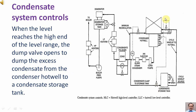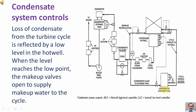The hot well level can be controlled within a safe range by modulating make-up and dump control valves. When the level reaches the high end of the level range, the dump valve opens to dump the excess condensate from the condenser hot well to a condensate storage tank. Loss of condensate from the turbine cycle is reflected by a low level in the hot well. When the level reaches the low point, the make-up valves open to supply make-up water to the cycle.